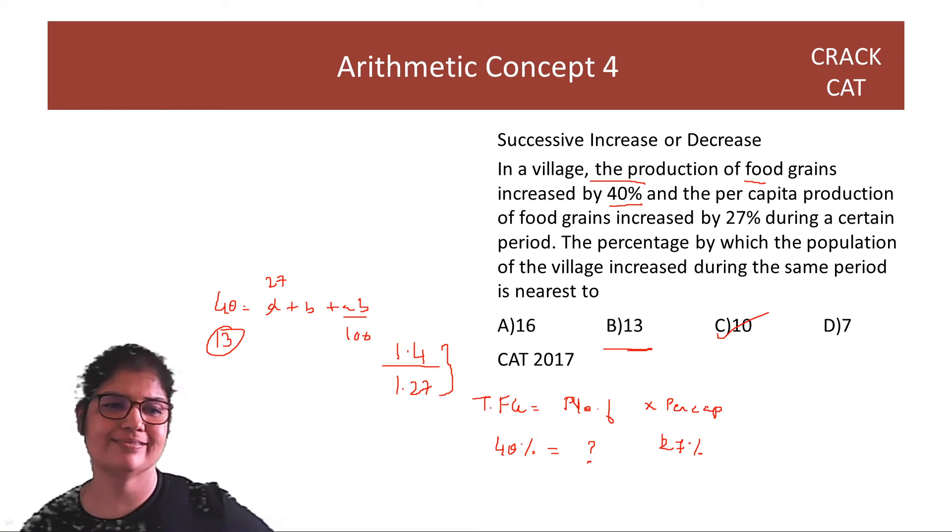Great. Next question. Now, we have the concept of equating ratios. So whenever you have two different ratios, two different quantities, always try to equate it first, equate a quantity and then find the multiplier. Equate and find the multiplier. So let's see that in action here.